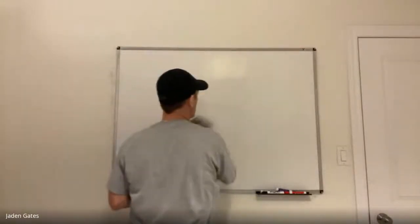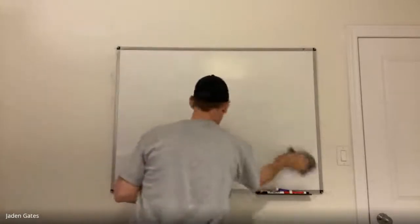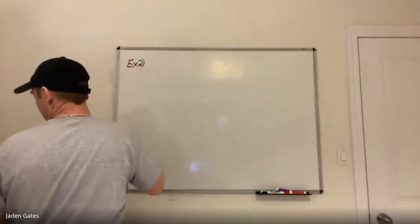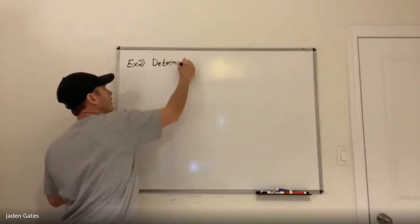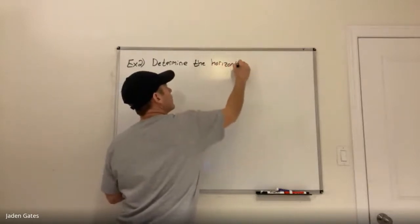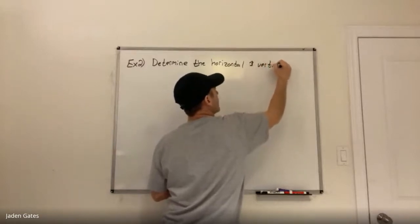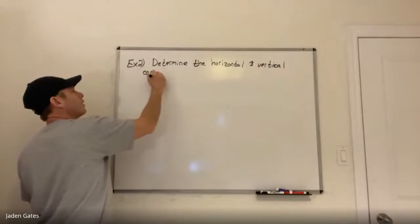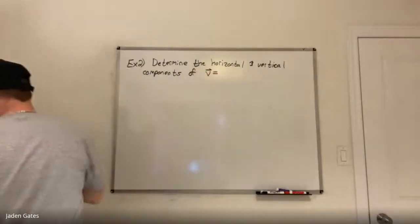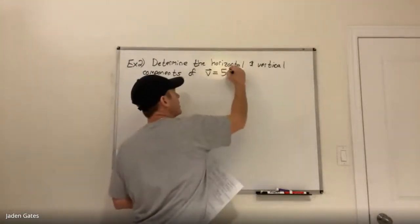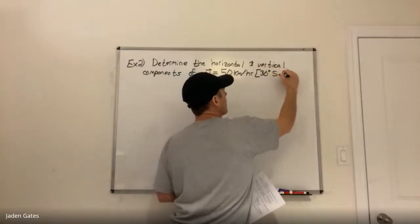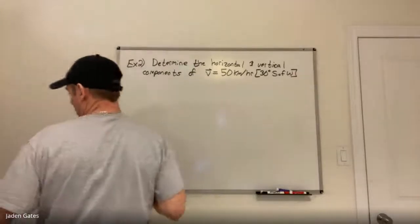So the next thing — not only are we going to draw vectors, we're going to look at their parts. Example two: determine the horizontal and vertical components of vector V, which is 50 kilometers an hour, 30 degrees south of west. So again, I'm going to do what's called find the vertical and horizontal components. Once again, I'm going to draw my vector.